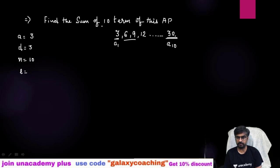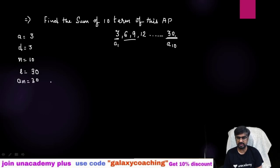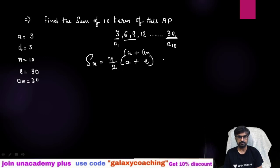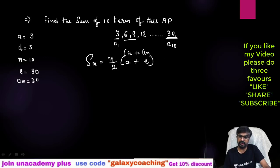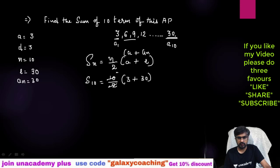The last term is 30 — you can see it because we need to find the sum of 10 terms and this is the 10th term. You can say l = 30 or an = 30 because this is the last term. Our shortcut is Sn = n/2 × (a + l). So S10 = 10/2 × (3 + 30) = 5 × 33 = 165. So the sum of 10 terms of this AP is 165.